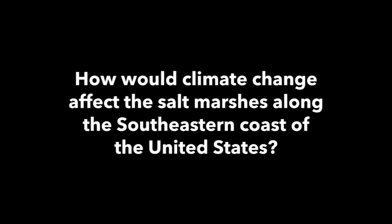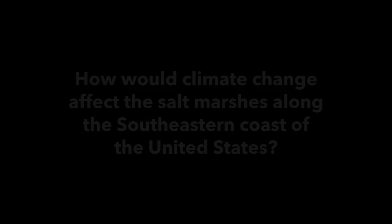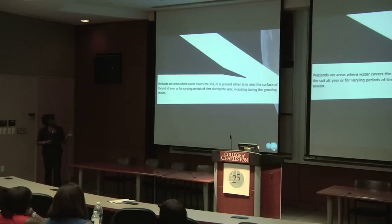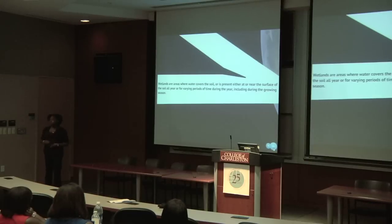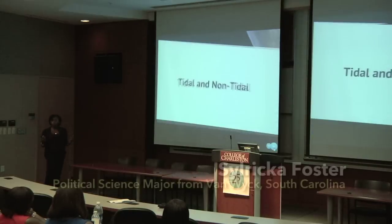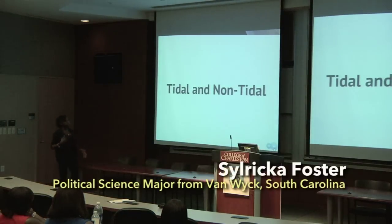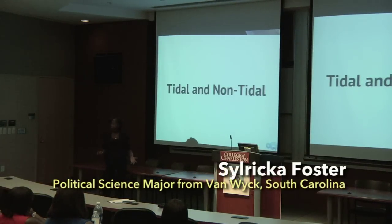According to the United States Environmental Protection Agency, wetlands are areas where water covers the soil or is present either at or near the surface of the soil all year or for varying periods of time during the year, including during the growing season. There are two categories under which wetlands are classified: tidal and non-tidal.